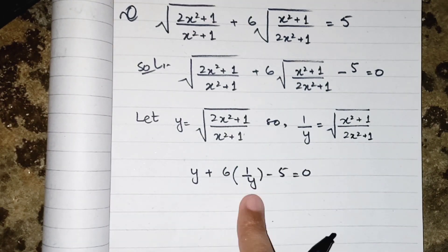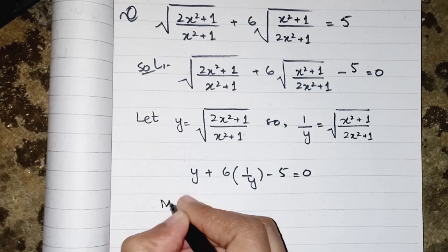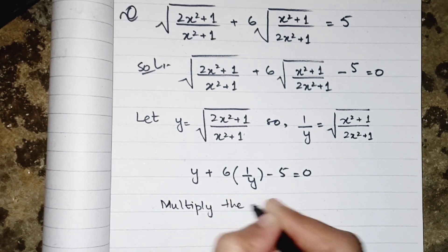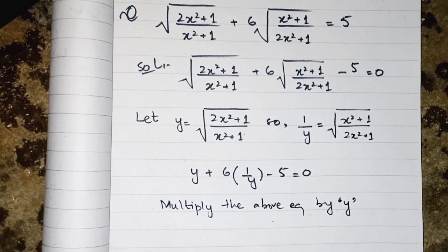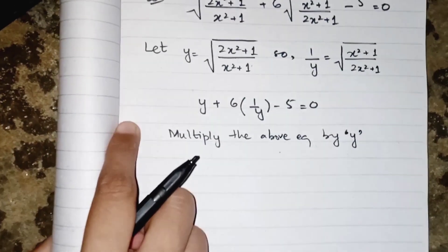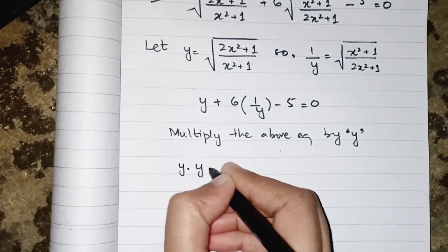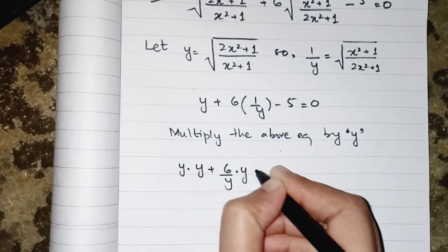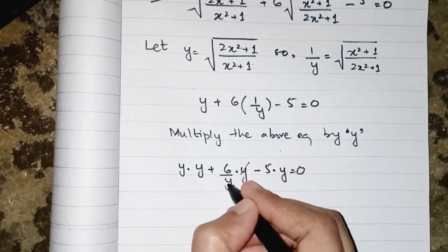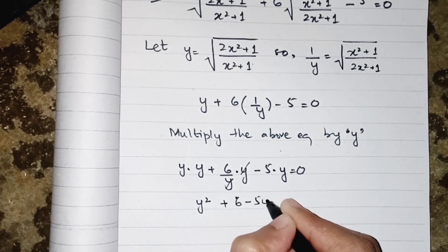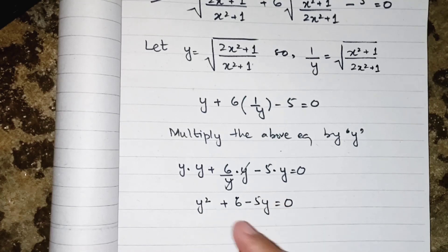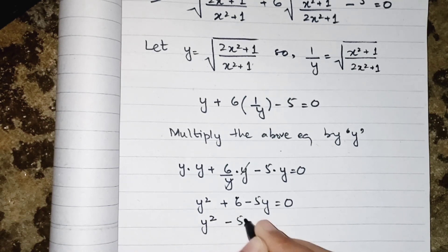Since y is in the denominator, we need to remove it by multiplying the entire equation by y. This gives us y·y plus 6 minus 5y equals zero, which simplifies to y² plus 6 minus 5y equals zero. Arranging into standard quadratic form: y² minus 5y plus 6 equals zero.